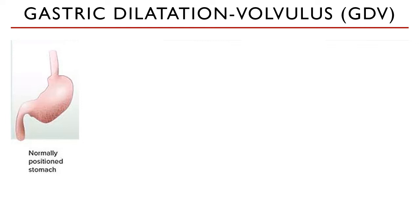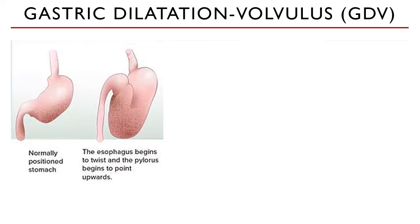For now, let's use these series of images. We start with a normally positioned stomach. Usually when a patient eats or drinks, the stomach physiologically distends. When the sensory receptors on the stomach wall detect that there is food in the oral cavity, it physiologically would distend to prepare for the entry of food. The abnormal part comes in when they eat or drink in large amounts in a very short period of time — that's one pinpointed cause of GDV. The stomach distends beyond its normal proportions. This is what we call gastric dilatation.